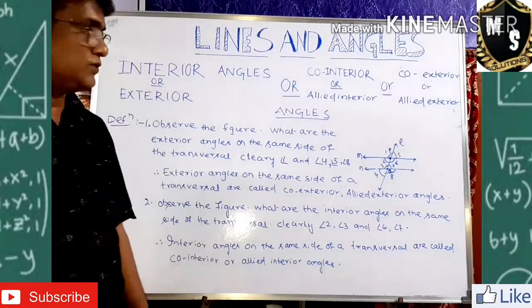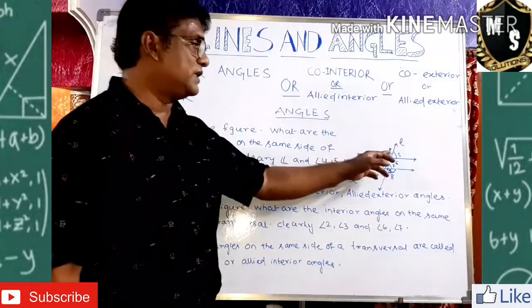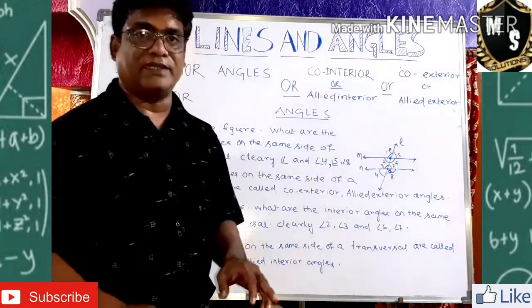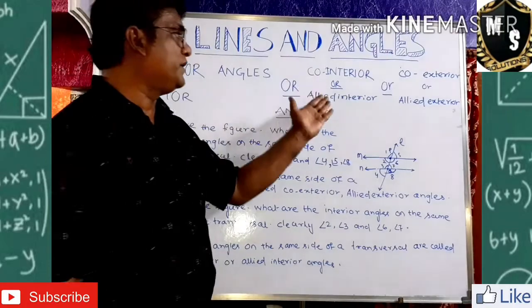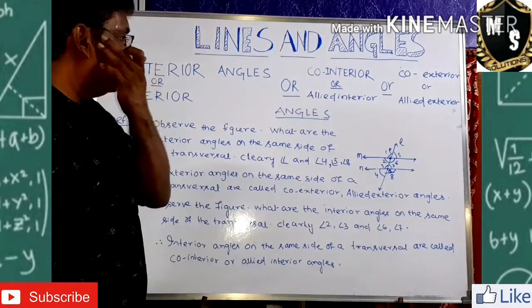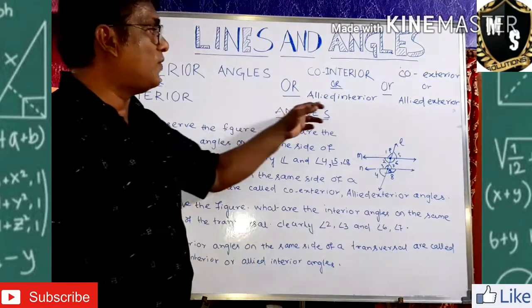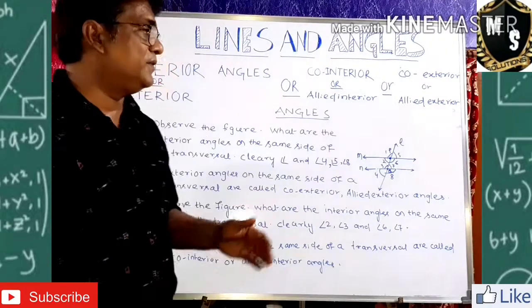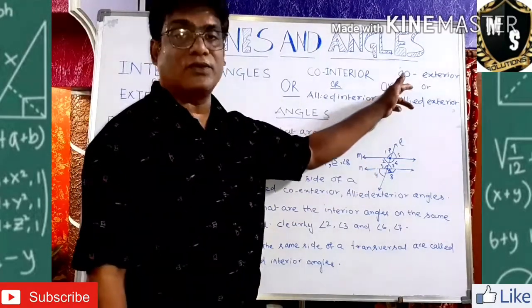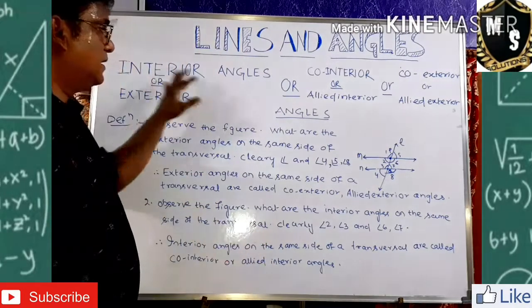To summarize: angles on the outside are called exterior angles, and angles on the inside are called interior angles. Interior angles on the same side of the transversal are called co-interior or allied interior angles. Exterior angles on the same side of the transversal are called co-exterior or allied exterior angles. I hope you understood this concept, and now we move on to the related theorems.